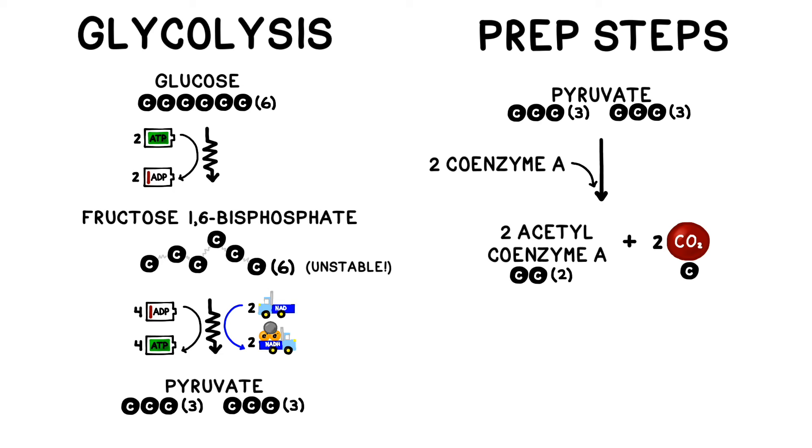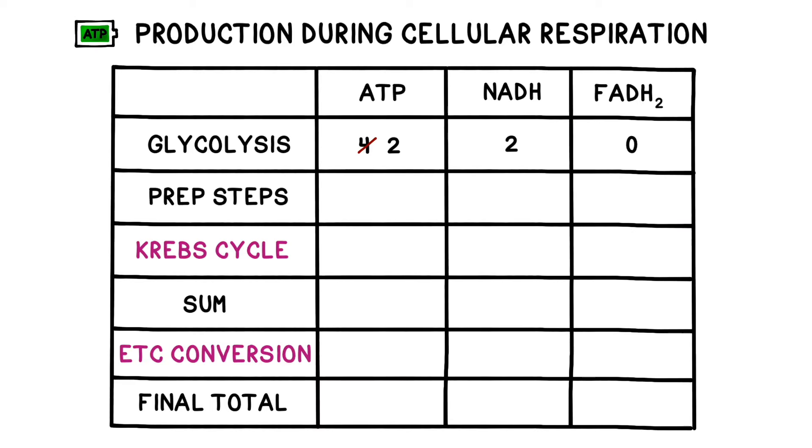At the end of the prep steps, we generate two molecules of something called acetyl coenzyme A or acetyl CoA. We also generate two molecules of CO2 and two reloaded molecules of NADH. Notice how pyruvate had three carbons and how those three carbons get reshuffled into a molecule with two carbons and a molecule with one carbon. We haven't magically lost any carbons anywhere in here, they've just been rearranged. Remember also that aerobic respiration produces carbon dioxide as a waste product, and this is one of the places that it comes from. Before moving on to the Krebs cycle, let's update our scorecard. Here we made zero ATP, two NADH, and zero FADH2.